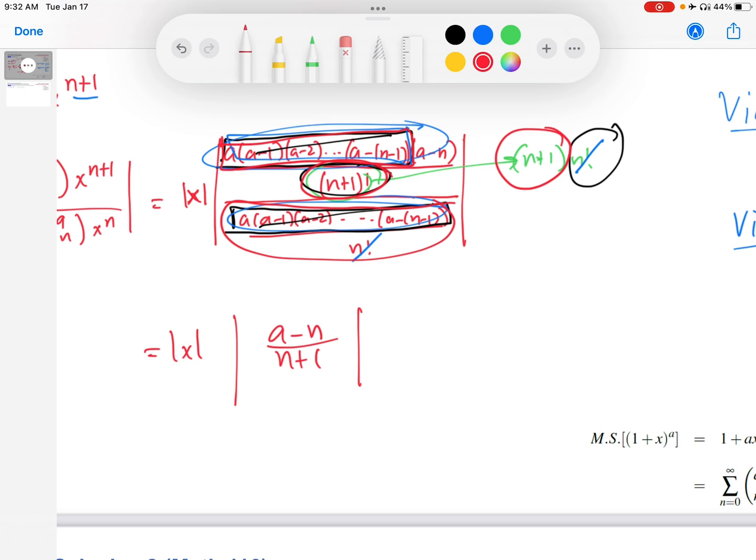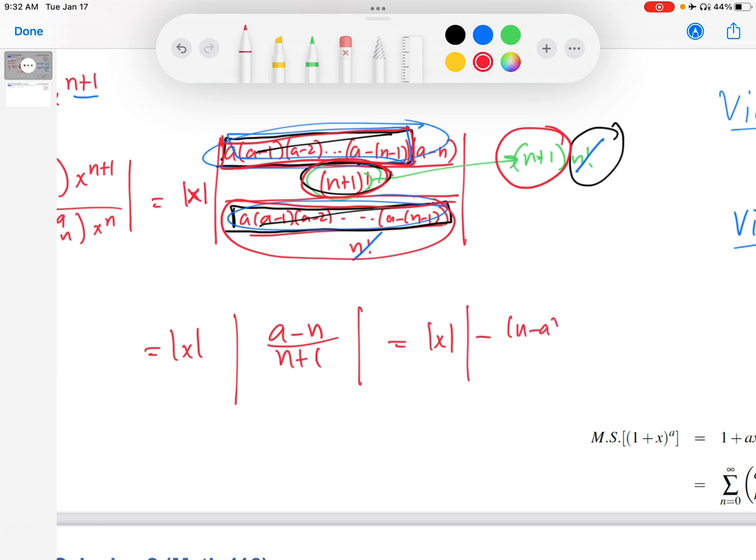Now I want to write this in a way that's going to be more suggestive of what's going to happen in a minute. I would like to factor out a negative out of the numerator so that it's n minus a over n plus 1. And then because of the absolute values, that negative doesn't do anything. And then n minus a over n plus 1. And then the denominator is never negative because it's n plus 1. So I'll write that as n plus 1. And then the n minus a in absolute values.